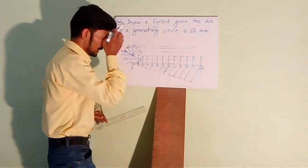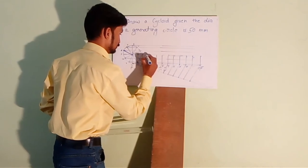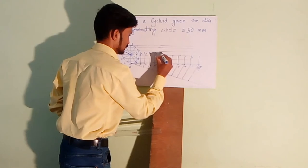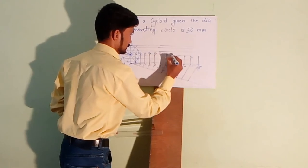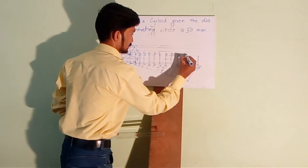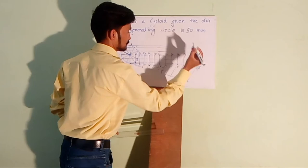And name these points as C1, C2, C3, C4, C5, C6, C7, C8, C9, C10, C11, and C12.